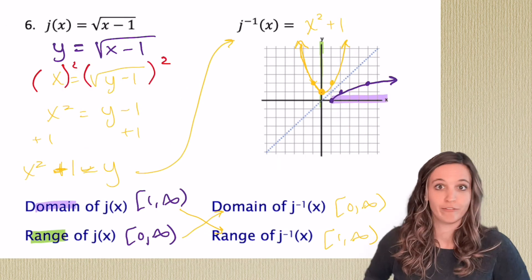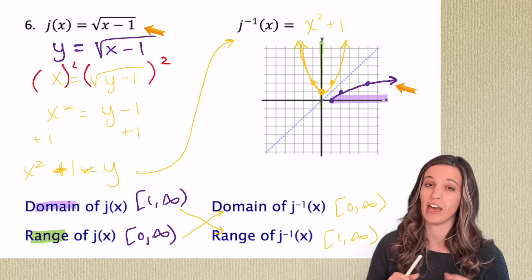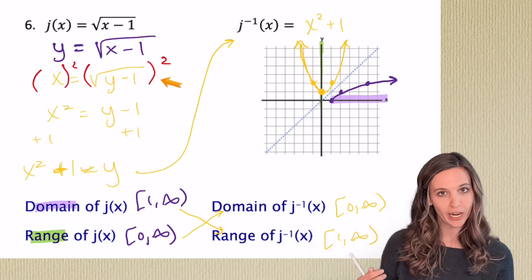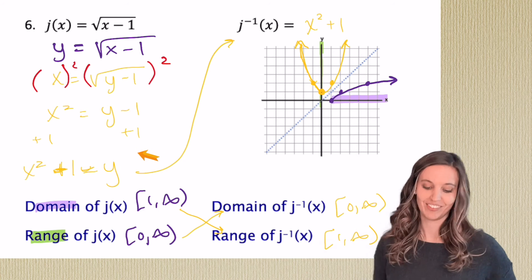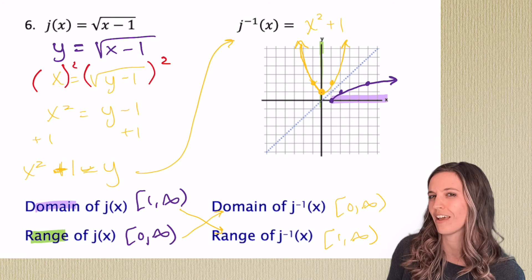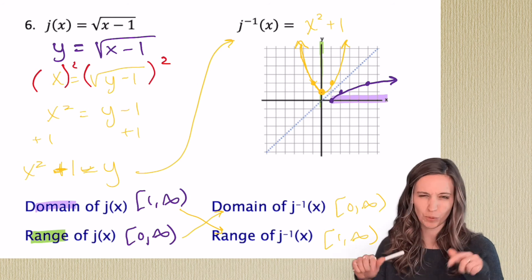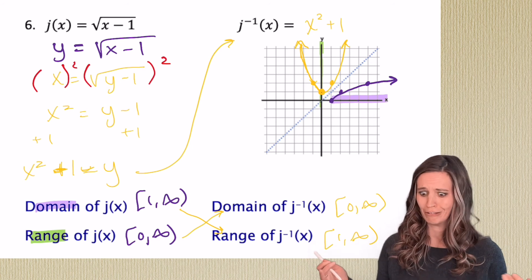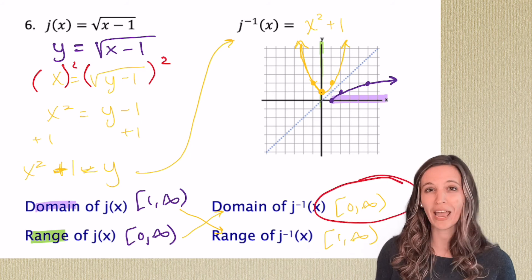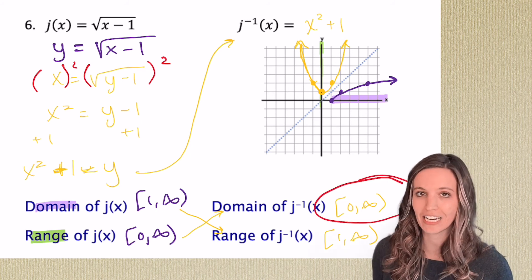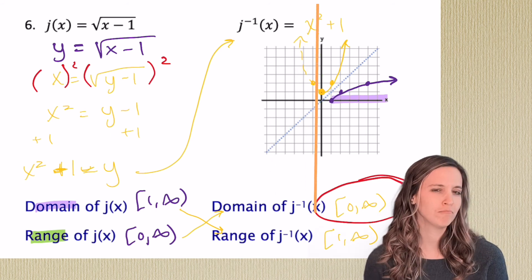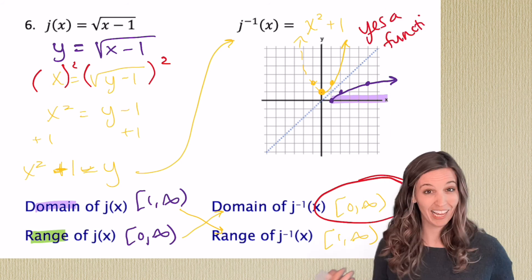Checking number six: we graphed that radical equation first, found its domain and range, swapped those so we have the domain and range of our inverse. Then algebraically, switching x and y and ending up with x squared plus one. It was important that I found the domain and range of my inverse before graphing — because the domain for my inverse is only true from zero to infinity, so I dash the left side of the parabola because it's not really there. Is my inverse a function? Yes. So when I start with the square root, my inverse is a function.